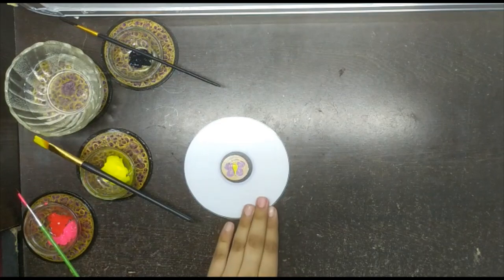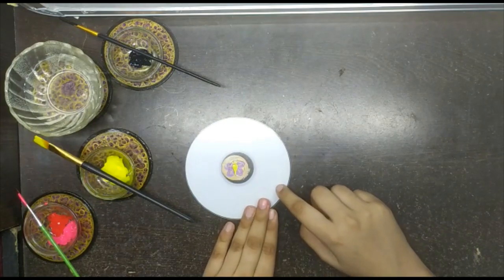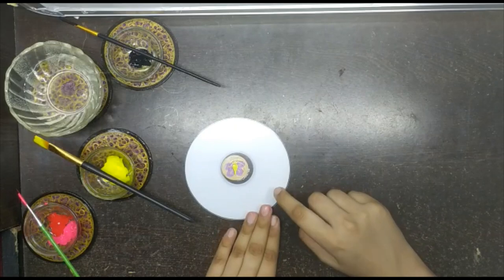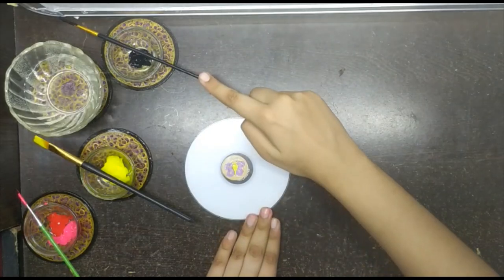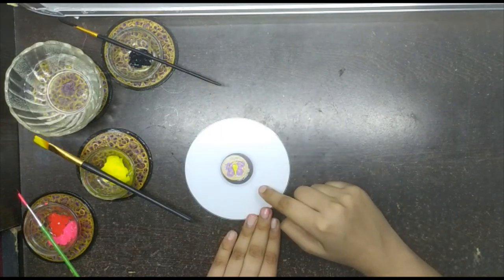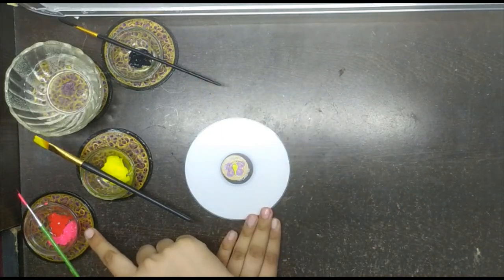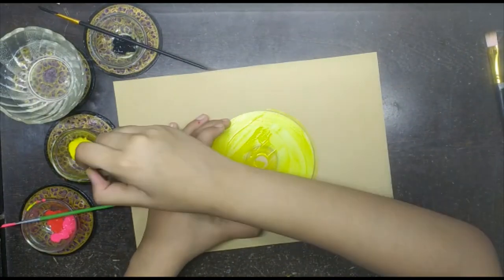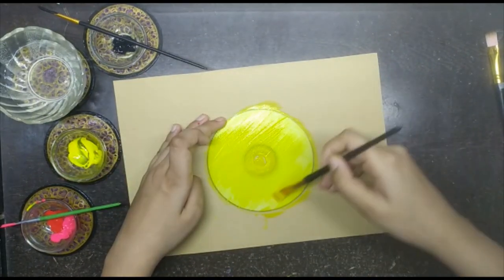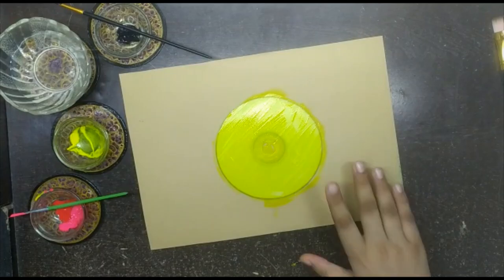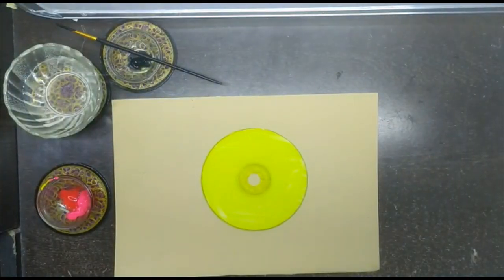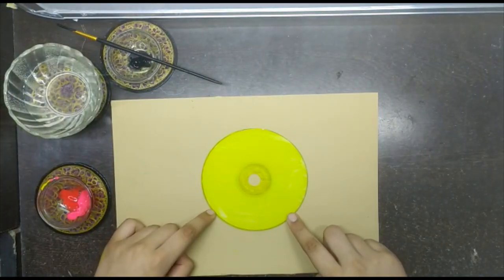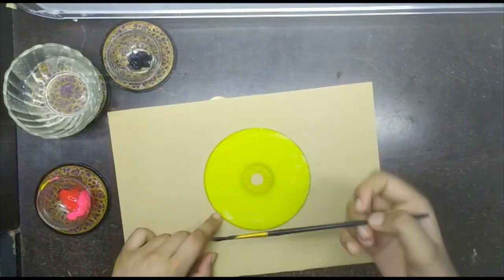So now I am going to paint the background with the yellow color. And then when it dries up, I will paint the happy face with the black paint and then I will decorate it with red and pink color. So let's start. Now we have to dry this up. My CD has dried up. Now I will make a happy face on it.